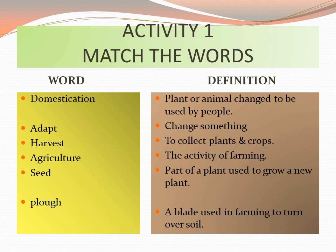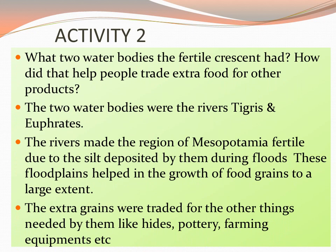Here we have the match-the-words activity, in which the words have been given and I have matched it for you. Now, Activity Two, children: what two water bodies did the Fertile Crescent have, and how did that help people trade extra food for other products?